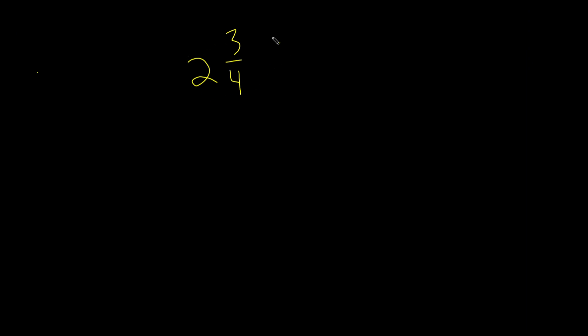So right here, we have the mixed number 2 and 3 fourths. And our first step is to multiply the denominator, which is 4, with the whole number, which is 2. So we're going to multiply these two numbers.